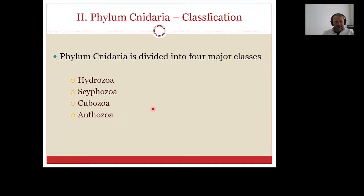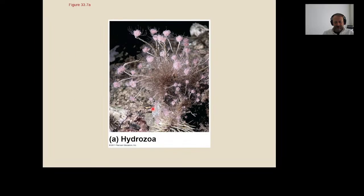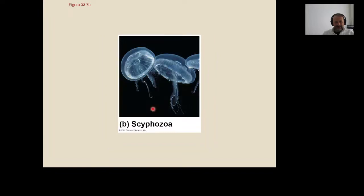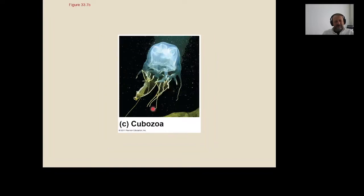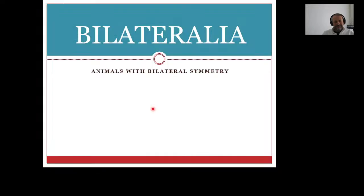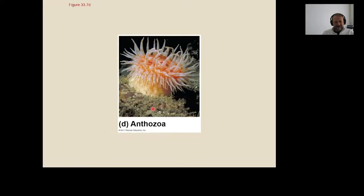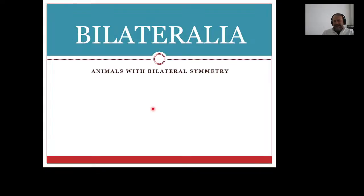Phylum Cnidaria is divided into four major classes: Hydrozoa, Scyphozoa, Cubozoa, and Anthozoa. Those are the four major classes of cnidarians. Since you are molecular biology students, I don't think you need that much animal systematics — just to have an idea, I prefer to give you these lectures.